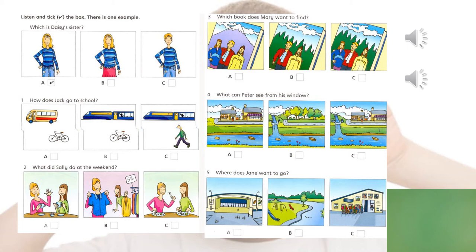Okay, so let's correct them together. Number one. How does Jack go to school? That's correct, he's B. Remember, he takes the train, but he also uses his bike.